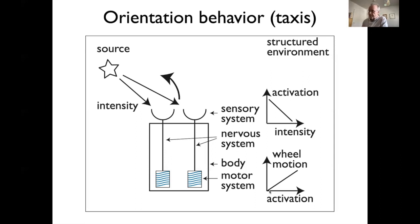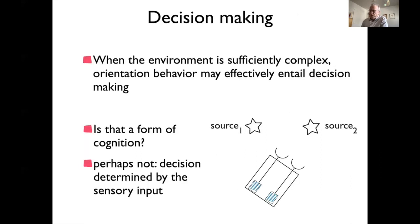This orientation behavior is frequently observed in many animals and even in plants without nervous systems. In a more complex environment with two sources of intensity, the system could do something that looks like decision making — turning to one source rather than the other, depending on which gradient it's closer to. However, we would probably not call this cognition yet, because the decision is entirely determined by the sensory input with a unique mapping from input to motor action.